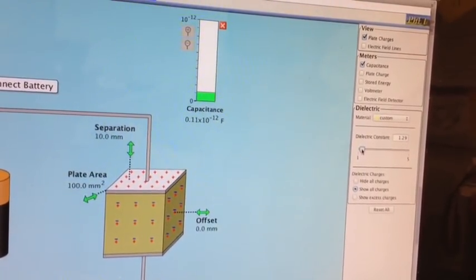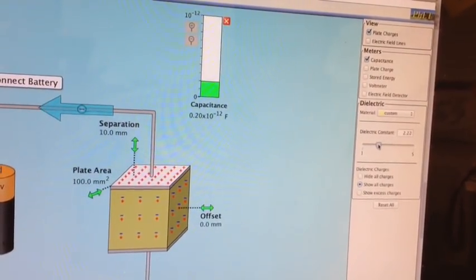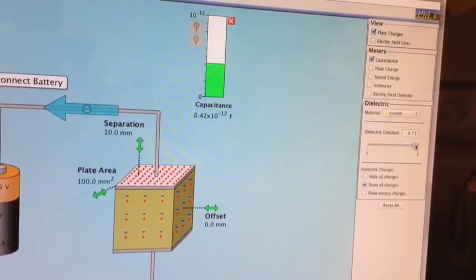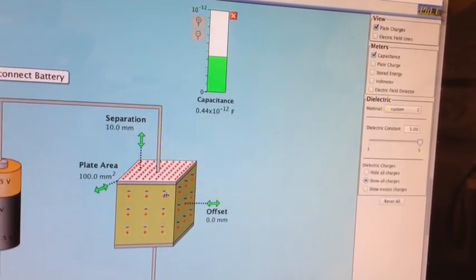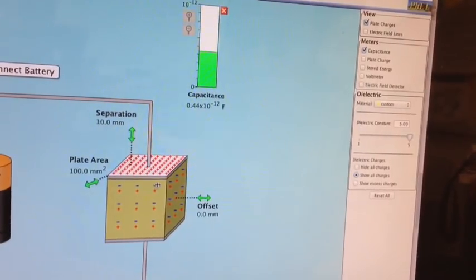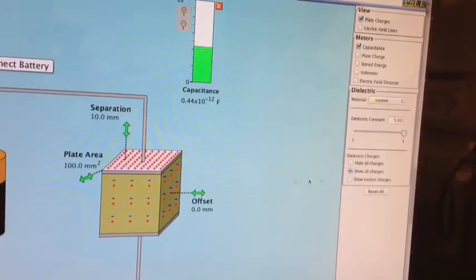So based on the polarity of your material, you can get these charges to separate a lot. Some materials, which are very polar, will have the negative charges separated from the positive charges, and these negative charges will have a great effect on the top plate because they're so close to it.